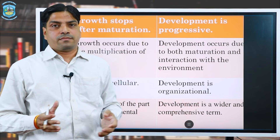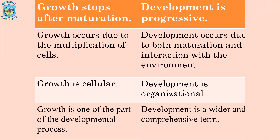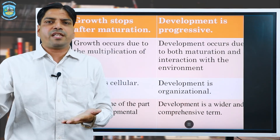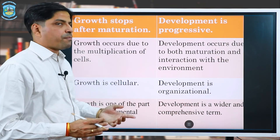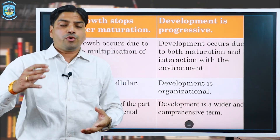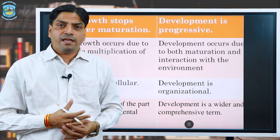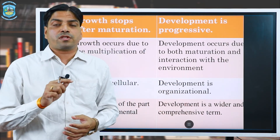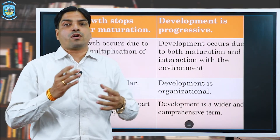Growth is cellular — because of mitosis, growth is taking place. Development, on the other hand, is organizational — development takes place in a very systematic way. From a neonatal child to the oldest person, development takes place throughout life in a very organized, systematic manner. Growth is one part of the development process; growth comes under the broader umbrella of development. Whereas development is a wider and comprehensive term which not only includes growth but also contributions from different parts of life.